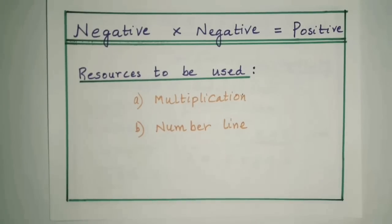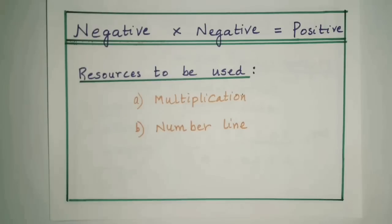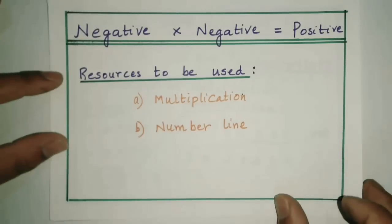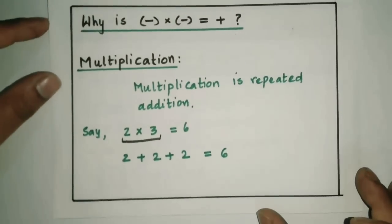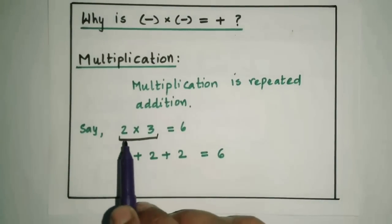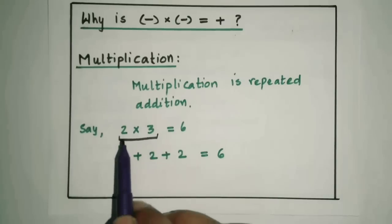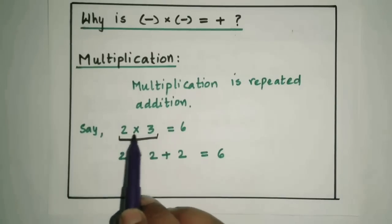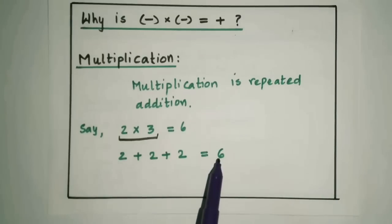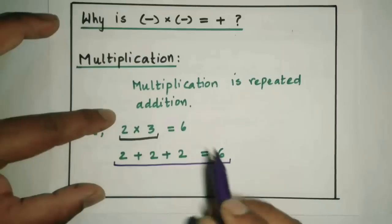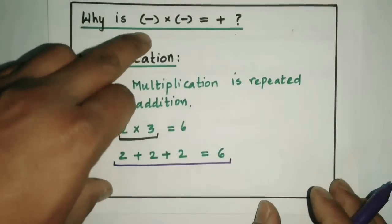Good morning. In this video I will explain why negative multiplied by negative gives us a positive answer. To explain that I use two concepts: multiplication and the number line. Multiplication can be defined as repeated addition. For instance, 2 into 3 means taking 2 three times — adding 2 three times gives us 6.